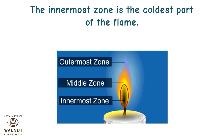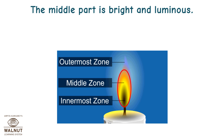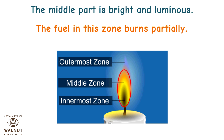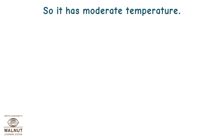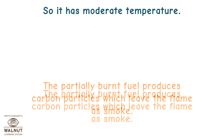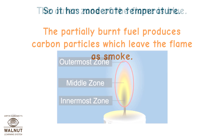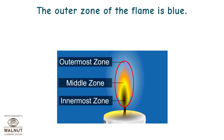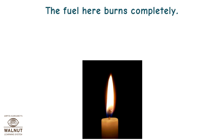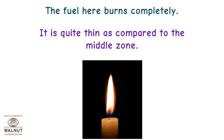The innermost zone is the coldest part of the flame. The middle part is bright and luminous — the fuel in this zone burns partially, so it has moderate temperature. The partially burnt fuel produces carbon particles which leave the flame as smoke. The outer zone of the flame is blue and is the hottest — the fuel here burns completely. It is quite thin compared to the middle zone.